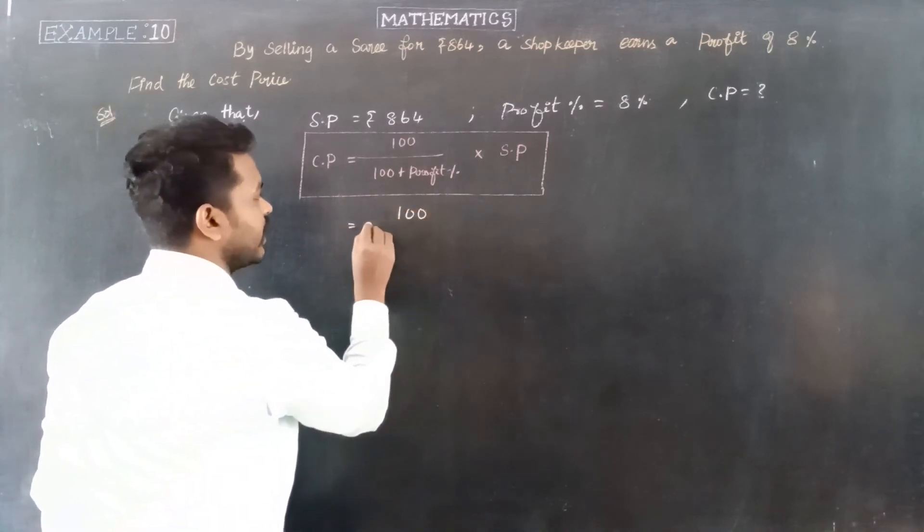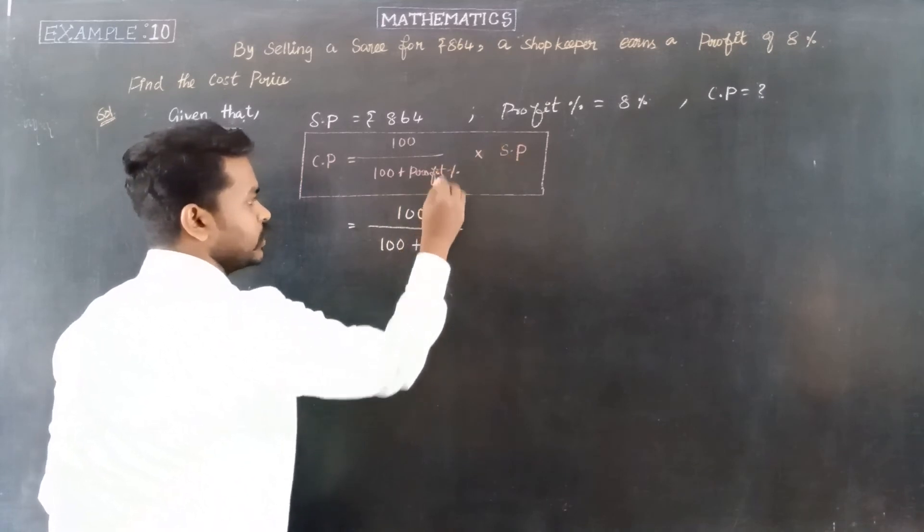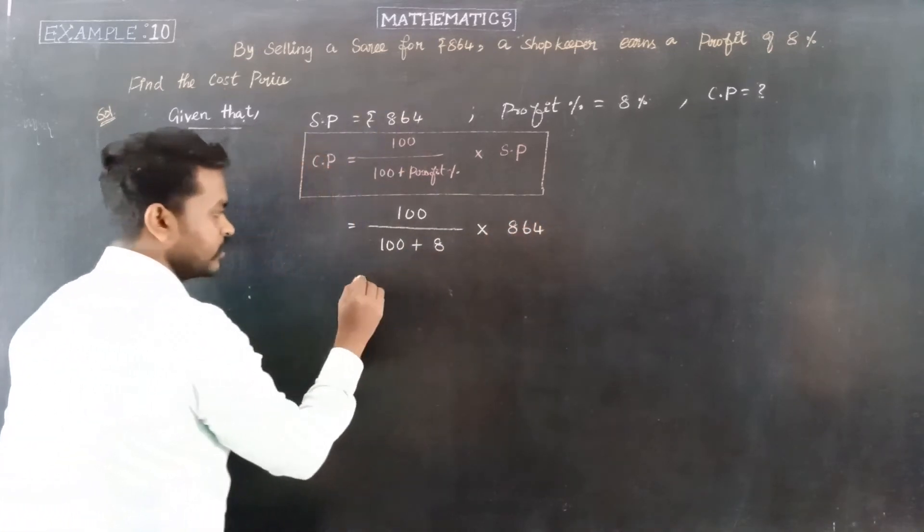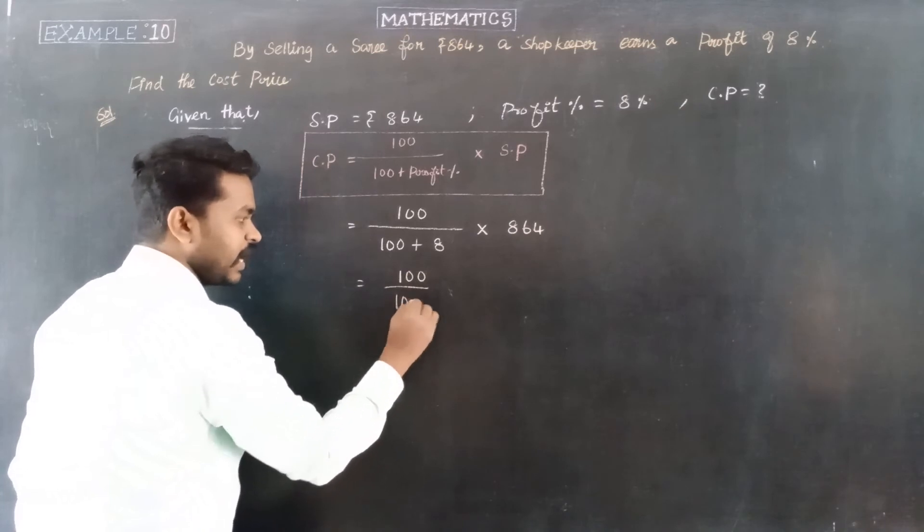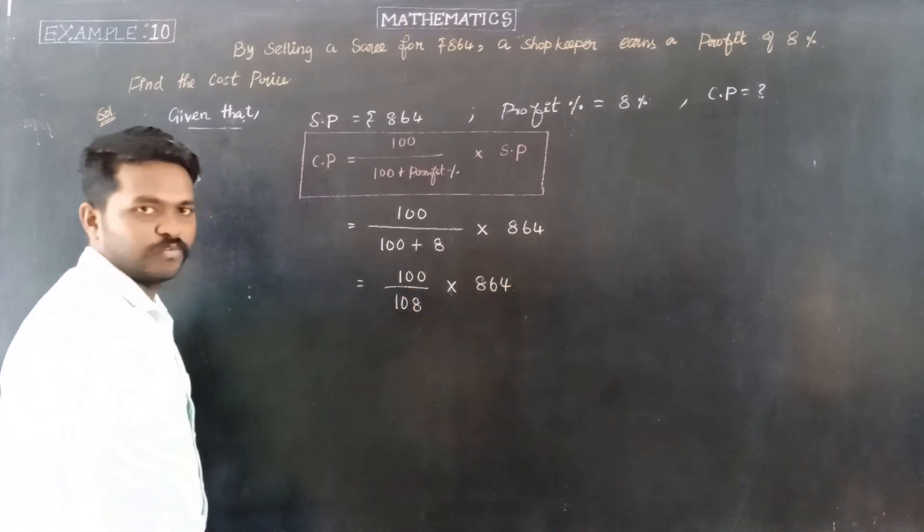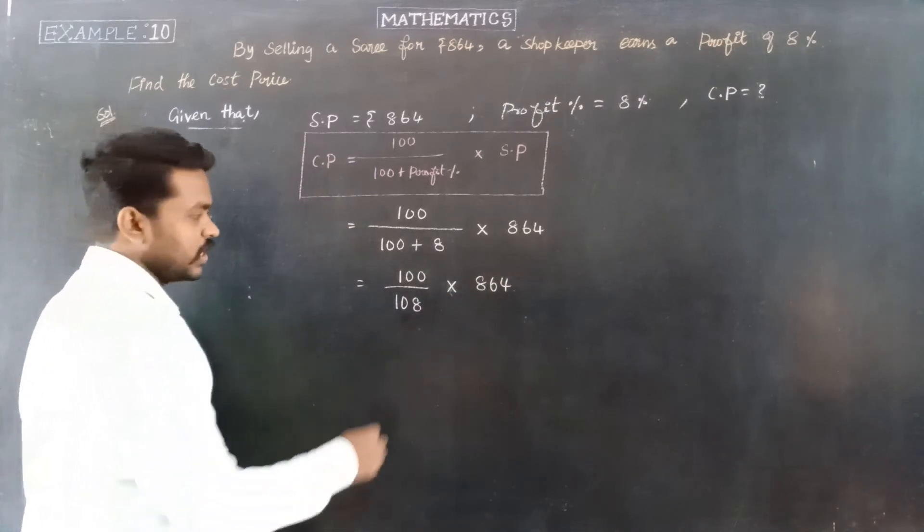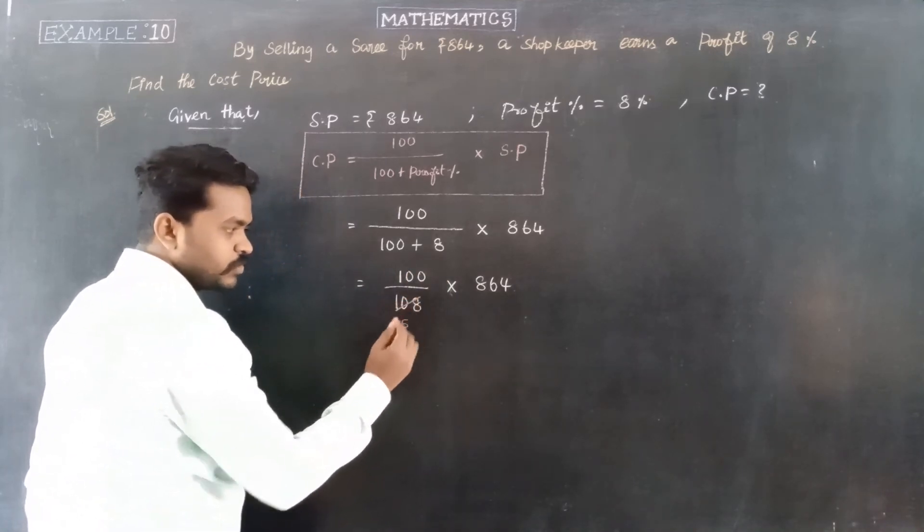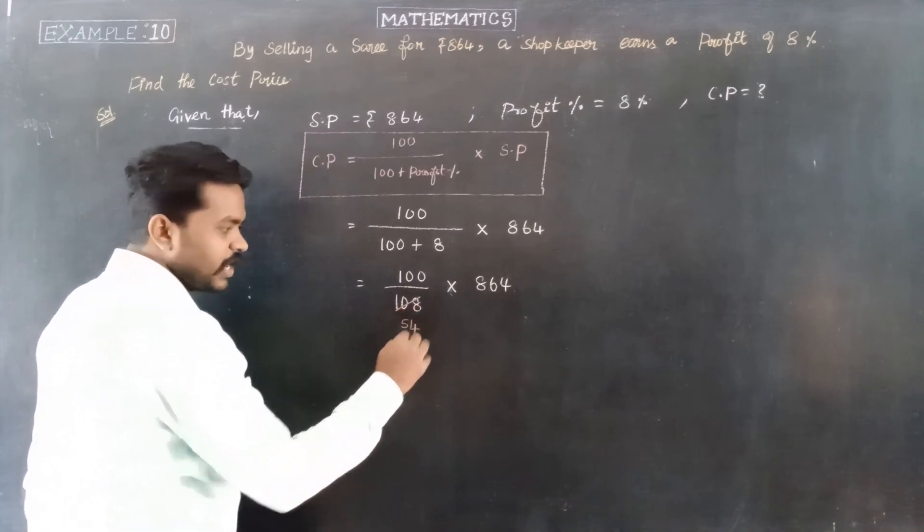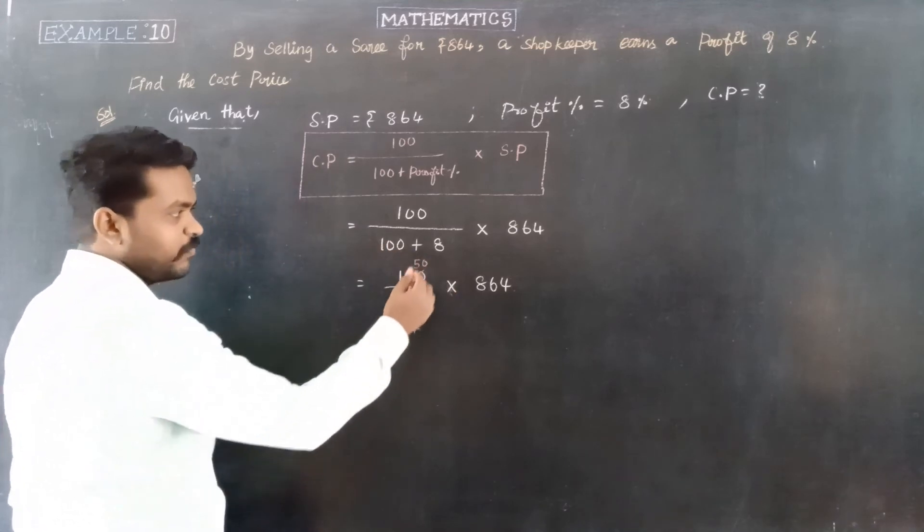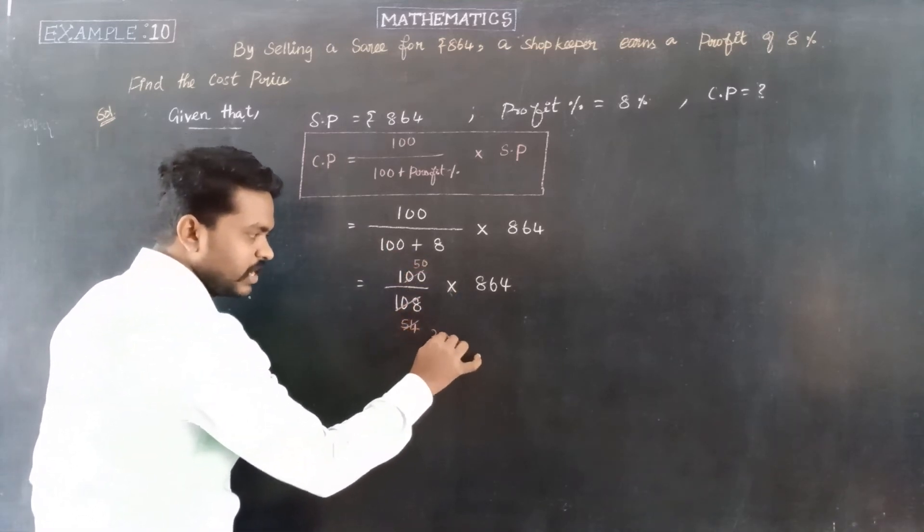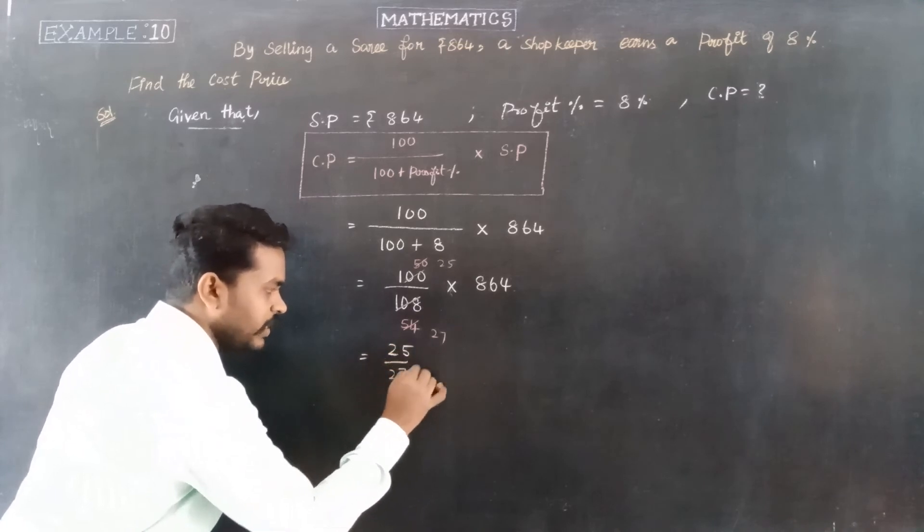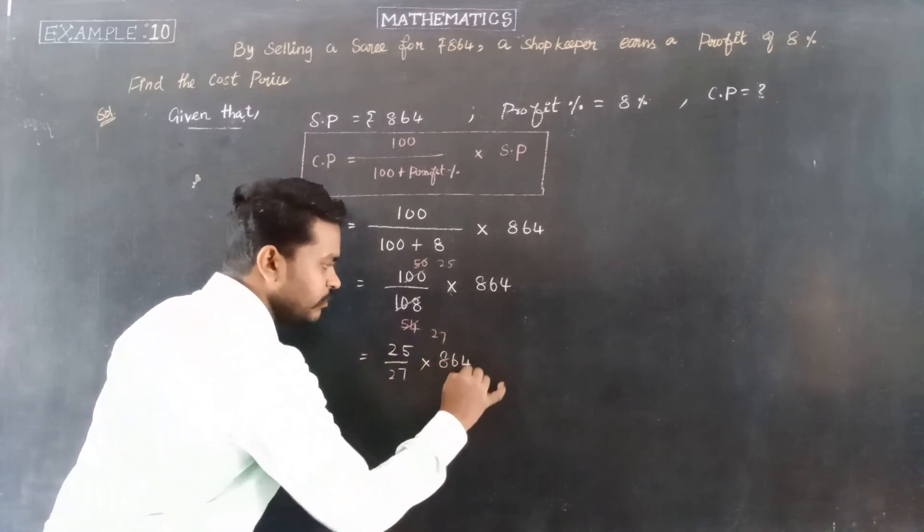So, 100 divided by 100 plus profit percentage 8%, into selling price 864. This equals 100 divided by 108, into 864. Simplifying, 100 and 108 can be reduced. 108 divided by 4 equals 27. Again, 27 and 54 can be simplified to get 25 divided by 27 into 864.